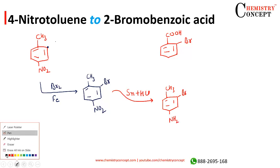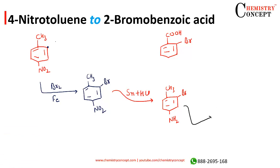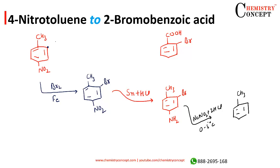From this, we treat it with NaNO2 and 2 HCl at zero to five degrees. We are converting this into the diazonium salt, giving us N2Cl.